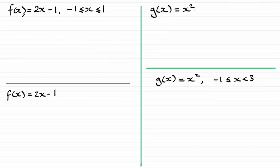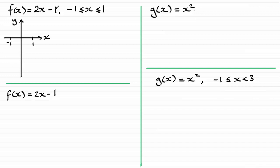Let's look at this first example: f(x) = 2x − 1, where x is defined between −1 and 1 inclusive. If we draw this graph and set up our axes, with y = f(x), you should recognize this as a straight line — it has the form mx + c, meaning a gradient of 2 and a y-intercept of −1. When sketching this line, I'm going to take the two endpoints, because that's quite important as you'll see.